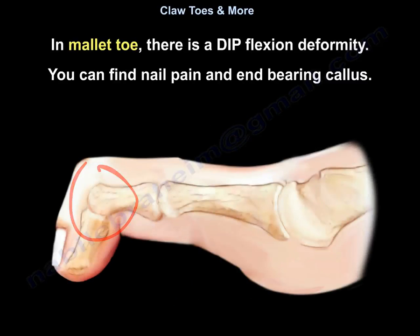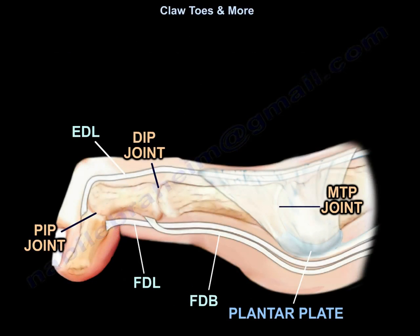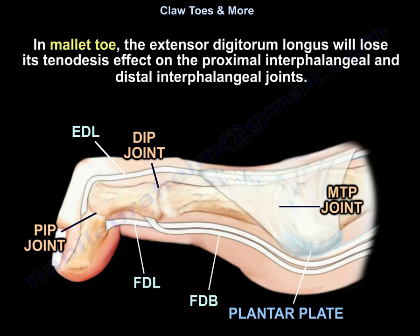The mallet toe is a DIP flexion deformity. You can find nail pain and end-bearing callus. The extensor digitorum longus will lose its tenodesis effect on the proximal interphalangeal and distal interphalangeal joints.